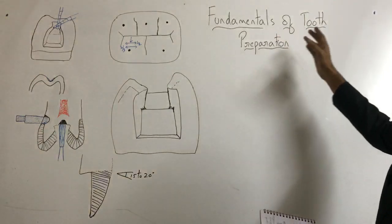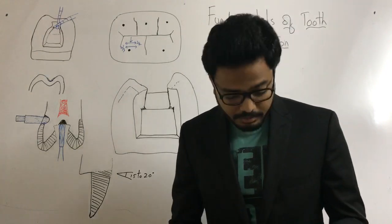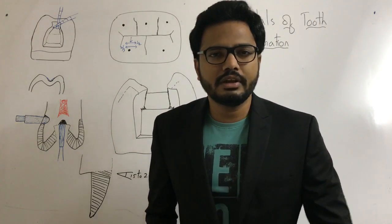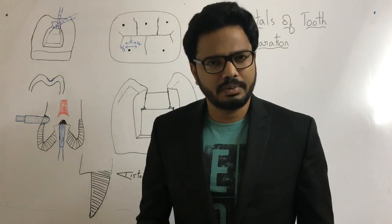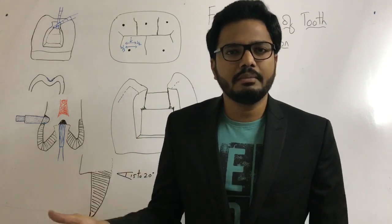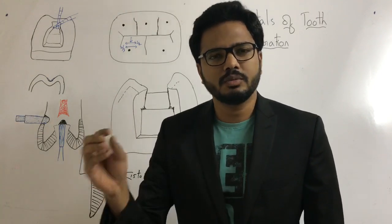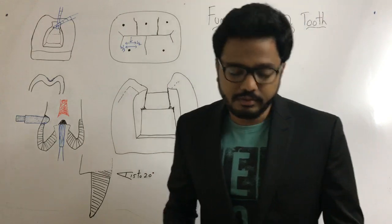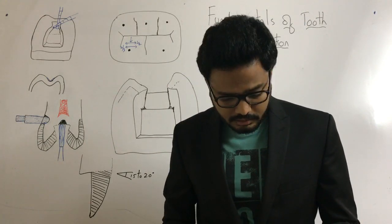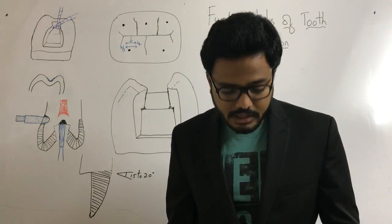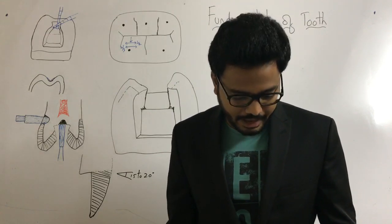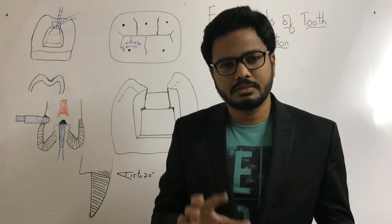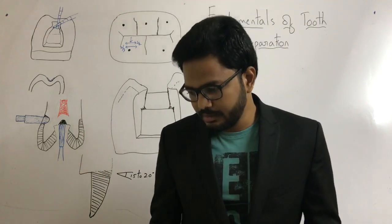What are we trying to achieve by applying fundamentals of tooth preparation? The fundamental concepts include: removal of all unsupported enamel, removal of faults, defects or caries, leaving remaining tooth structure as strong as possible, protection of the pulp, and finally ensuring the restorative material is retained, strong, aesthetic and functional. All these fundamental concepts are addressed in the definition itself.